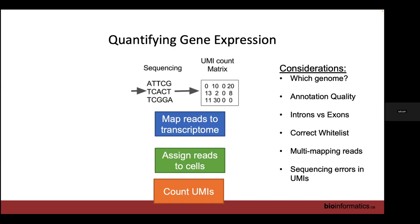CellRanger also deals with sequencing errors in UMIs by assuming up to one base pair error is allowed when counting, and it will correct for that.